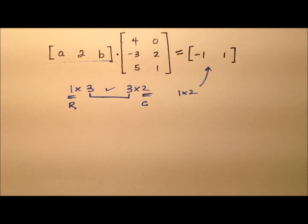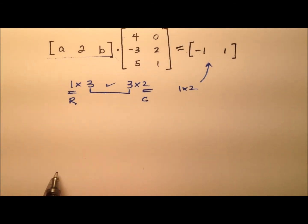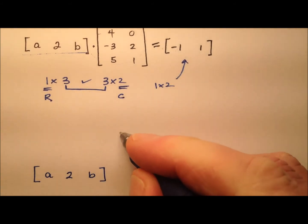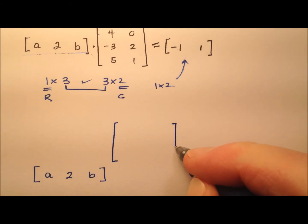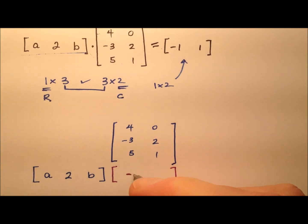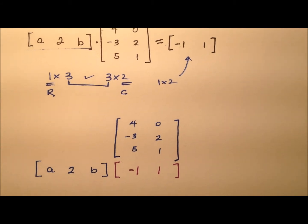So let's go ahead and write our matrix algorithm down here and line things up. So we have our first matrix, which is that one by three, and its entries are A, two, and B. And the second matrix, we're going to raise that up a little bit, and those entries are four, negative three, five, zero, two, and one. And then in a different color, I'm going to go ahead and write this product matrix. I do it this way because I think it does a really nice job of visualizing what's going on here and how things are lining up.